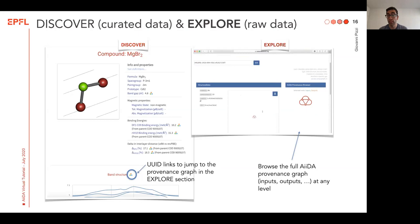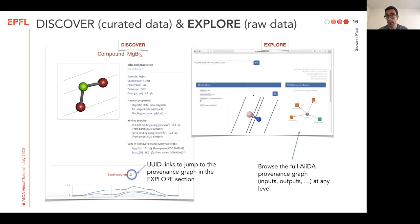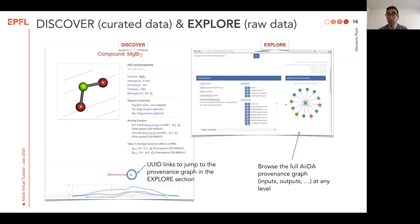In this way, we can look into the crystal structure which we used as an input. We can visualize it, download it in a number of formats, and we can see in the provenance browser that it was used by three calculations as an input, but again it was computed by a calculation. We can continue browsing the history to understand exactly how we got to the final result that we published — in this case, the band structure.